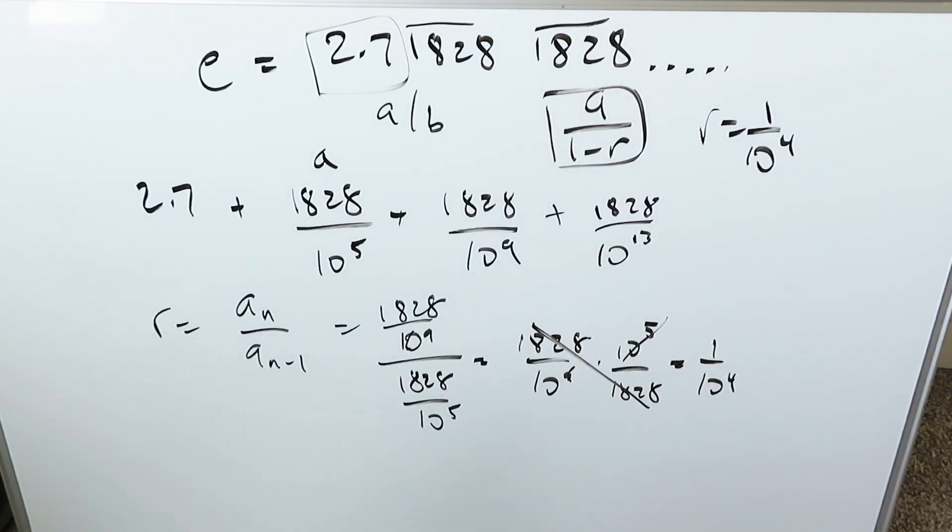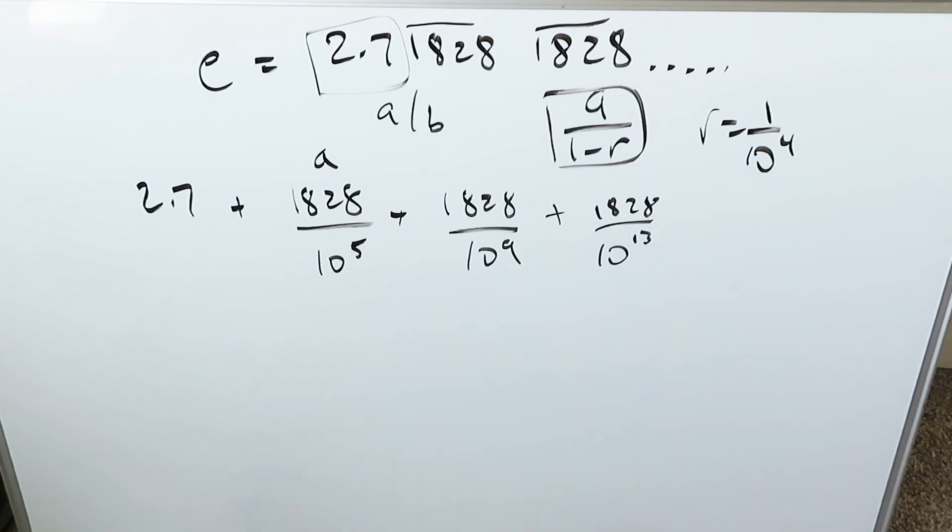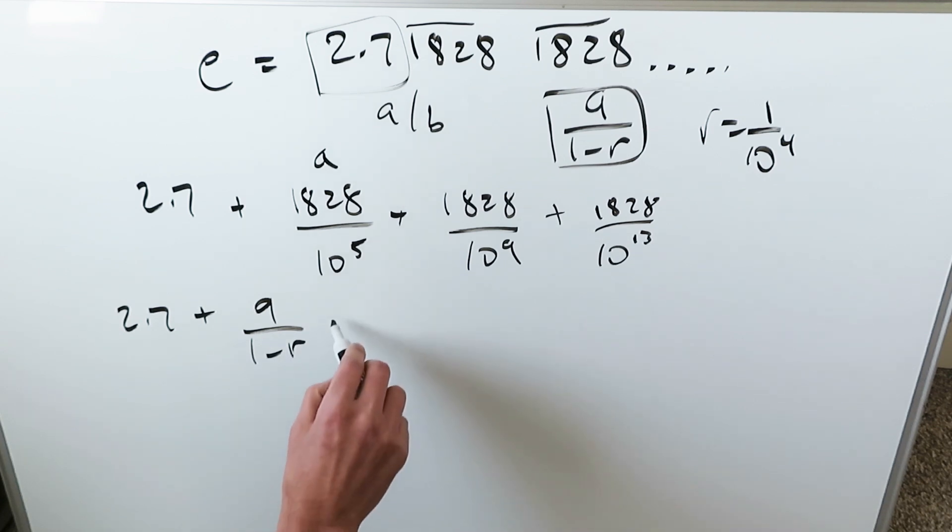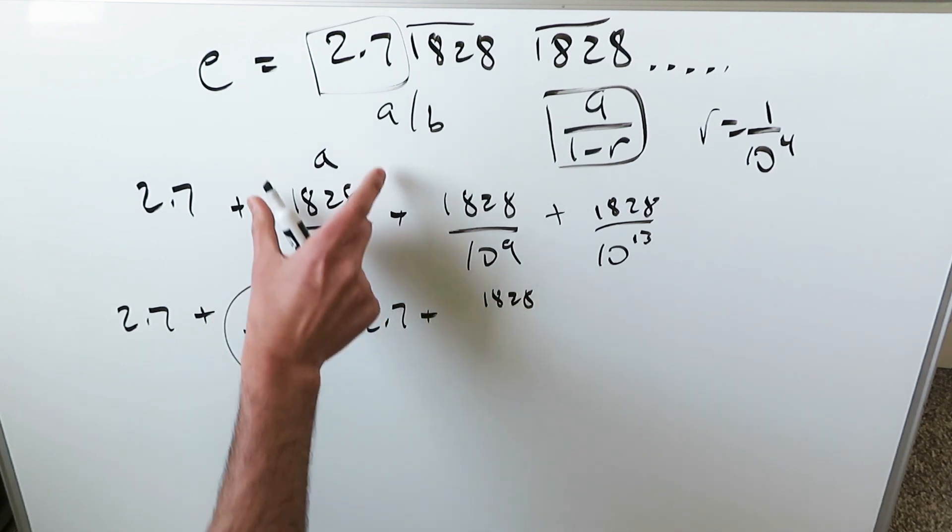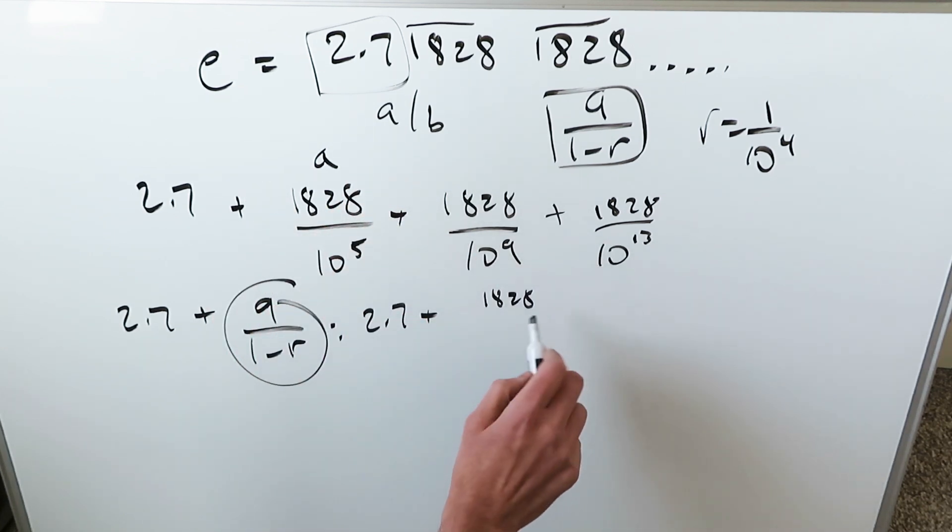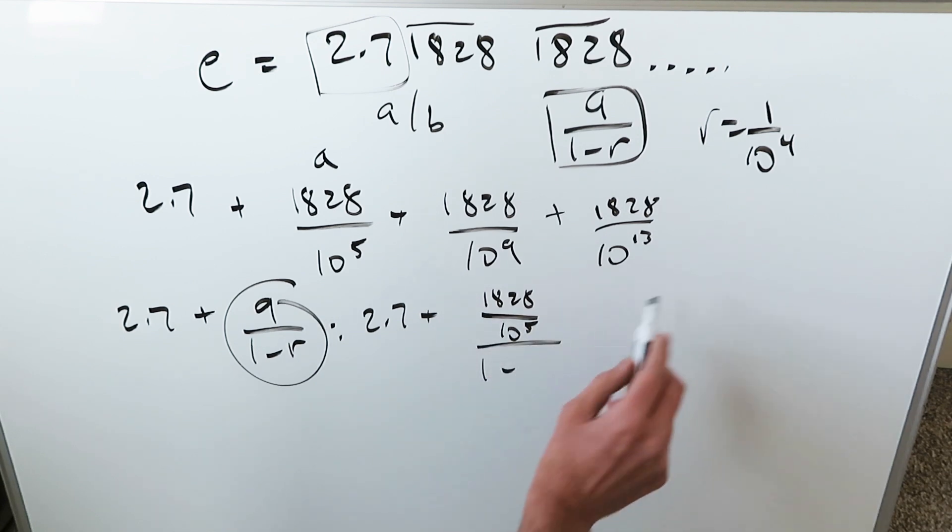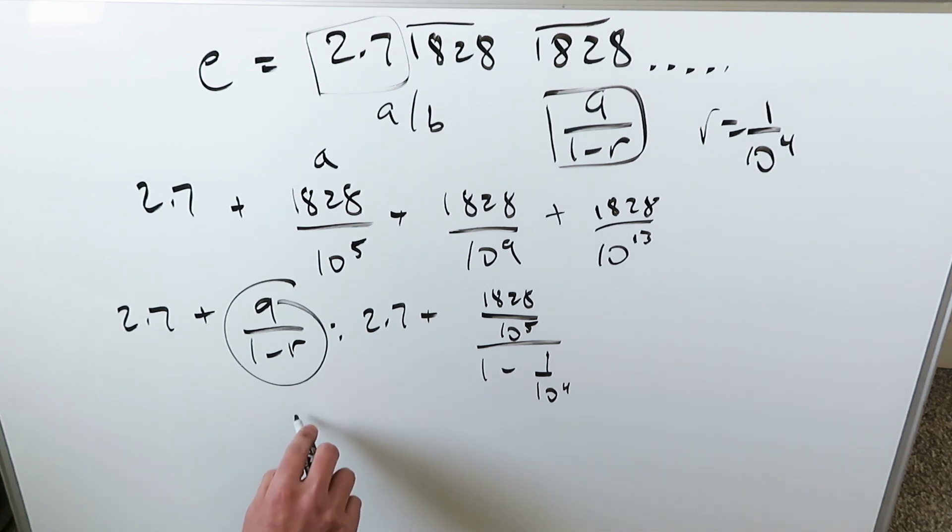power of 4. That would be my common ratio: 1 divided by 10 to the power of 4. So that part is done. What we need to do is run this formula through. Everything would play out like this: 2.7 plus that formula a over 1 minus r. This part right here, when you start plugging in the items, you'd have this - your first term 1828, this is my first term because it's the first term of a repeating sequence, divided by 10 to the power of 5, divided by 1 minus my common ratio 1 divided by 10 to the power of 4. Look here, only in the denominator I have 1 over 1 minus 1 over 10